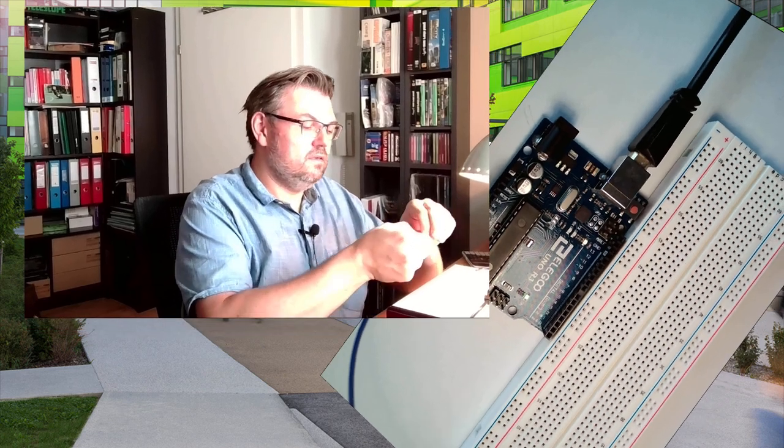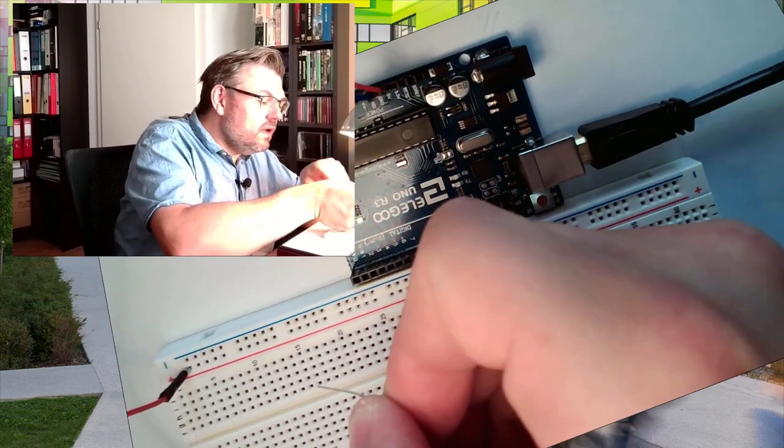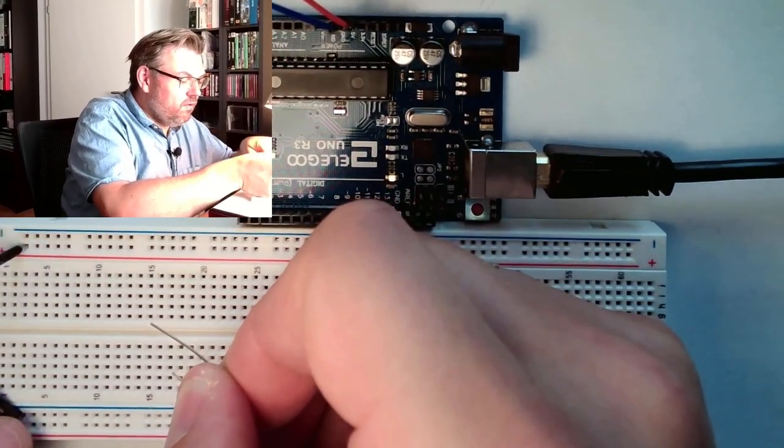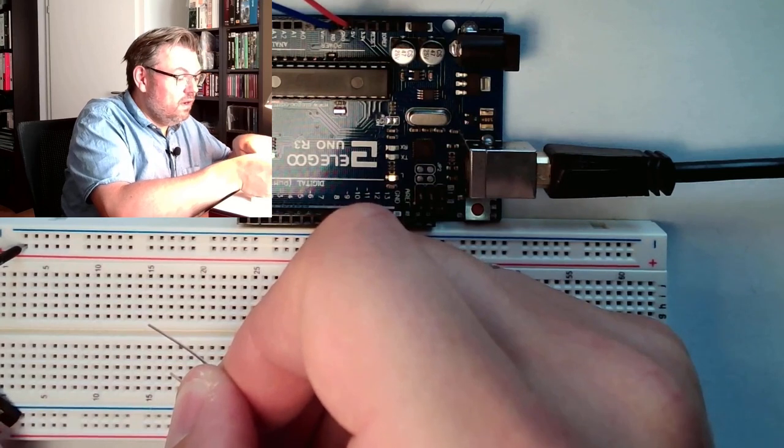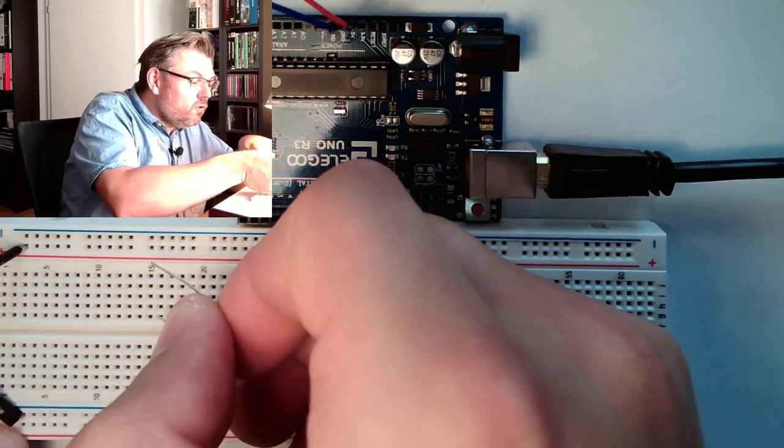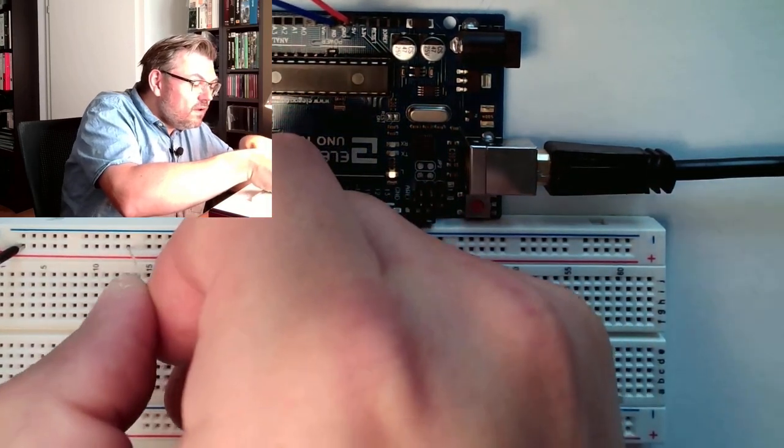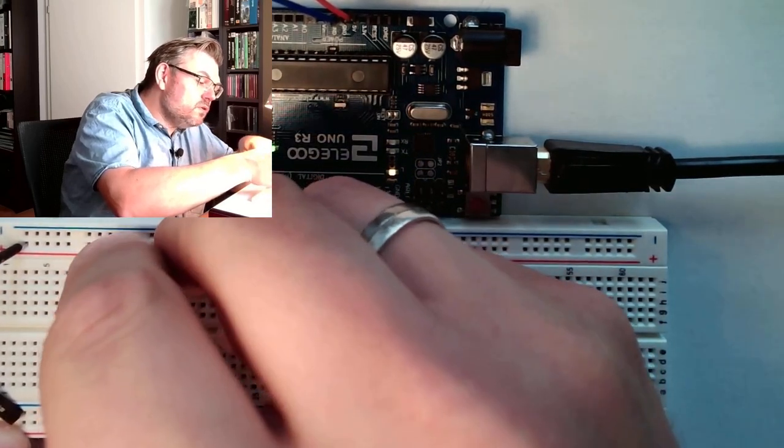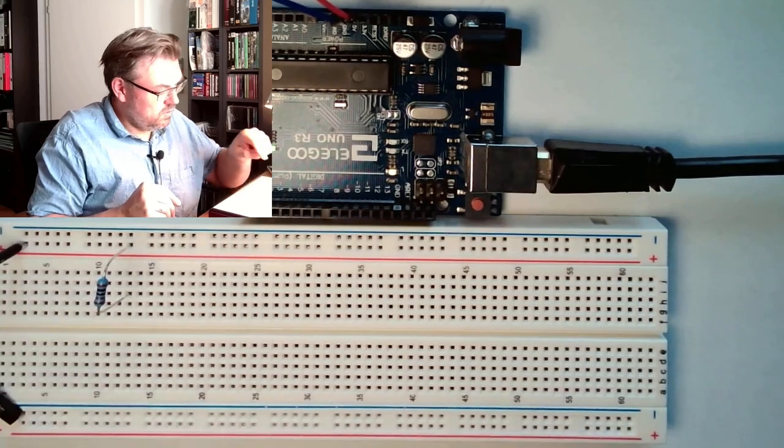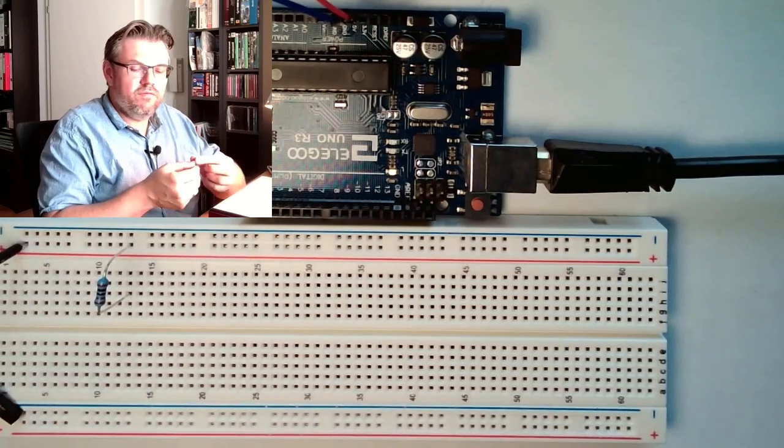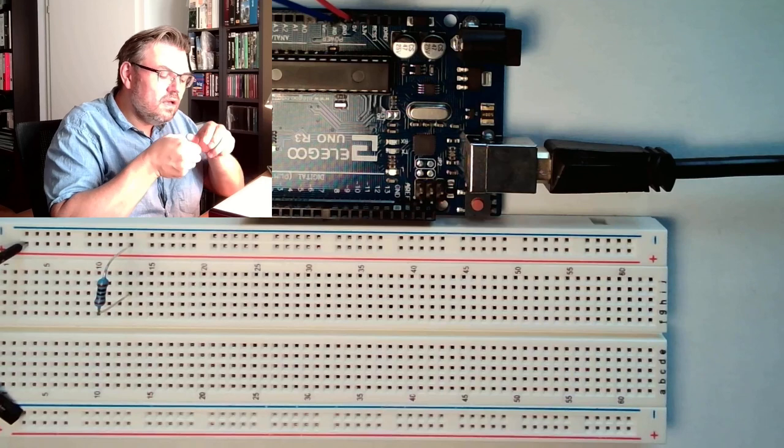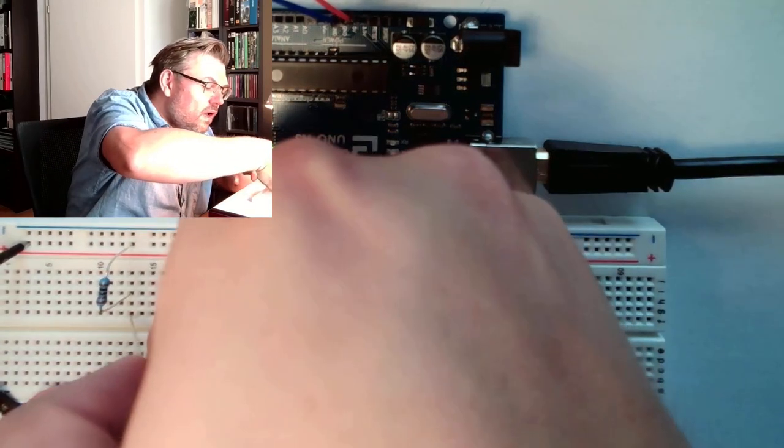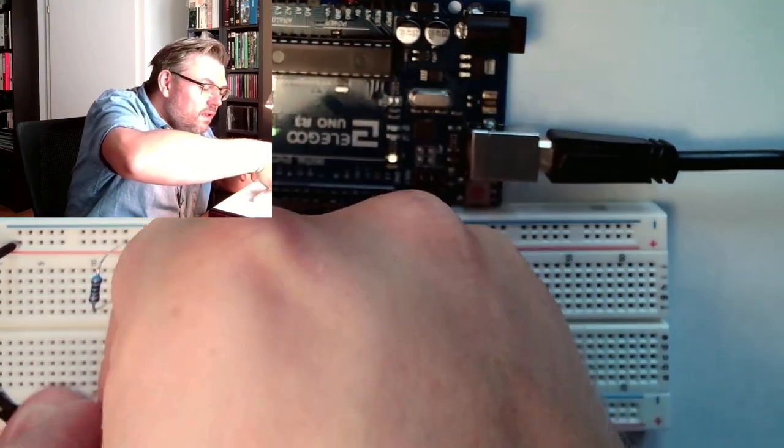So I have here a 1kΩ resistor. This 1kΩ resistor I have plugged in here plus 5V and here I have plugged in ground. So I will put this 1kΩ resistor here. And then I also have a 2kΩ resistor and this 2kΩ resistor I will simply plug in here.